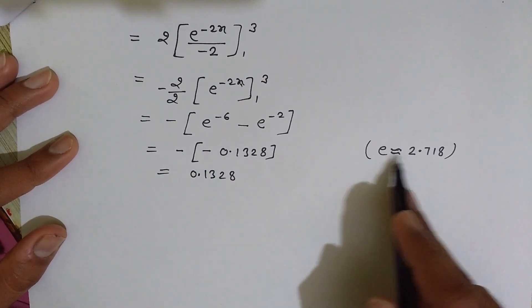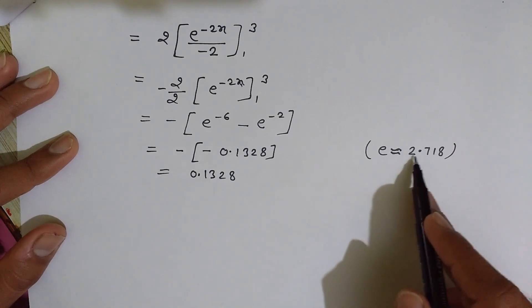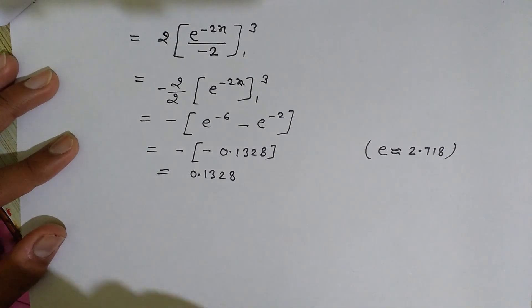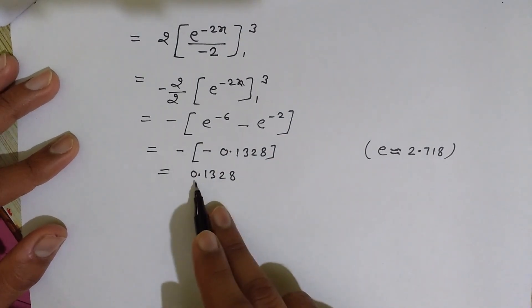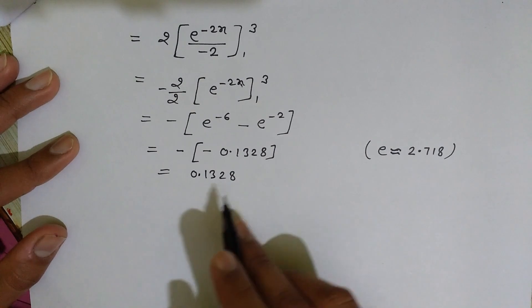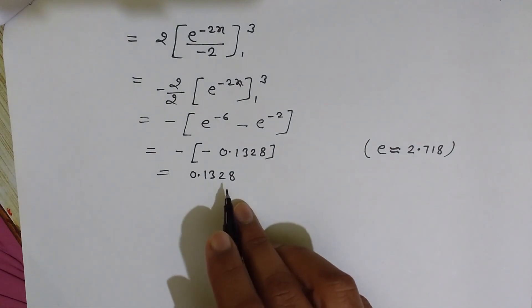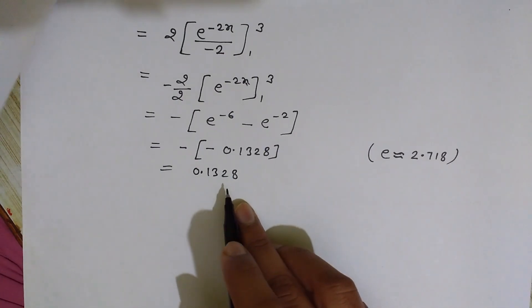You should know that the value of the constant e is approximately 2.718. So if you solve it, you will get the value 0.1328 as the probability that the random variable x lies between the values 1 and 3.